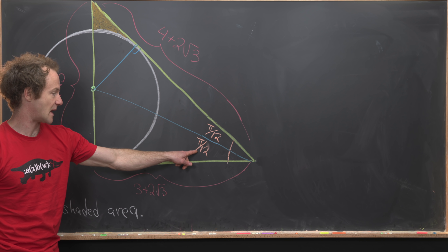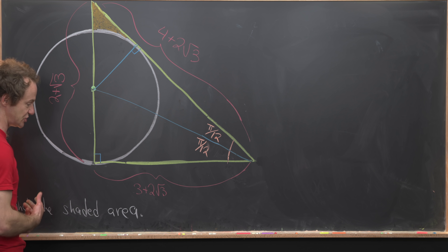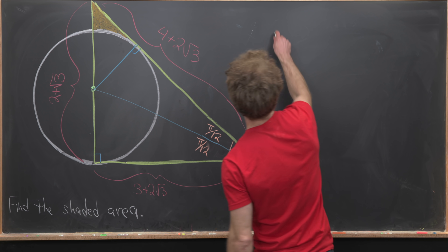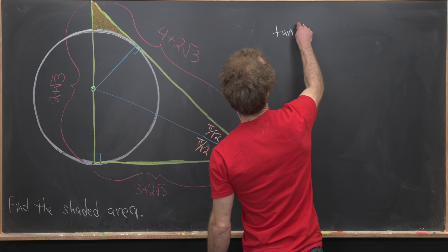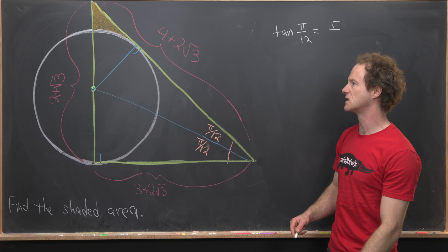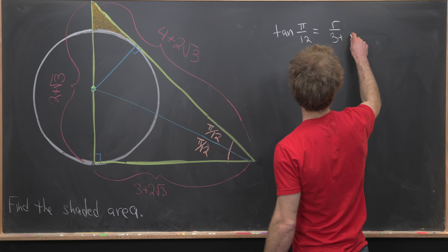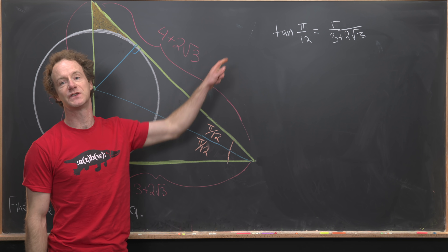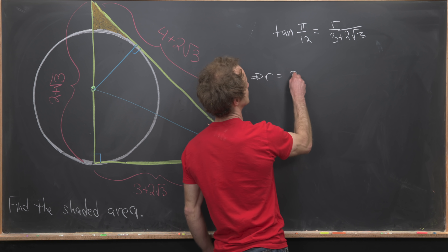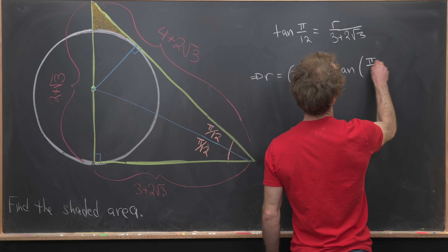So we have a pi-over-12 angle at each sub-triangle. The tangent of pi over 12 equals the radius of the circle divided by 3 plus 2 times the square root of 3, by the definition of tangent. Solving for the radius gives r equals (3 plus 2 times the square root of 3) times the tangent of pi over 12.